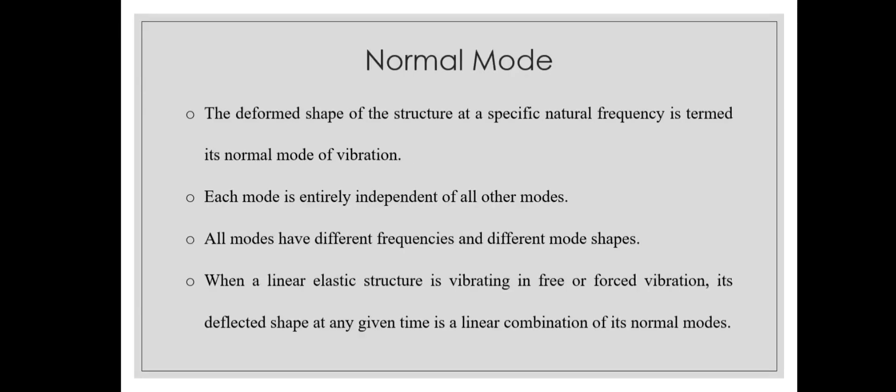What is a normal mode? The deformed shape of the structure at a specific natural frequency is termed its normal mode of vibration. Each mode is entirely independent of all the other modes. If a structure has 10 modes, each of the modes is independent of the other. All modes have different frequencies and different mode shapes, but sometimes two modes can have the same frequency yet still have different mode shapes. The most important point is: when a linear elastic structure is vibrating in free or forced vibration condition, its deflected shape at any given time instant is a linear combination of all its normal modes.